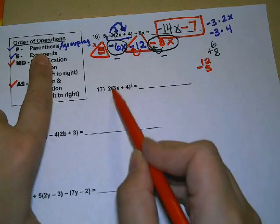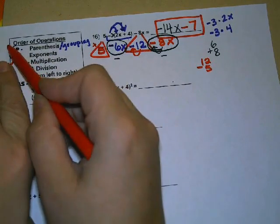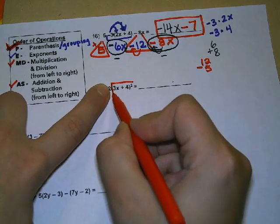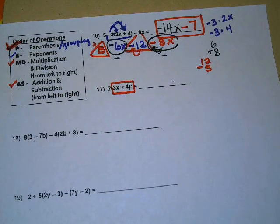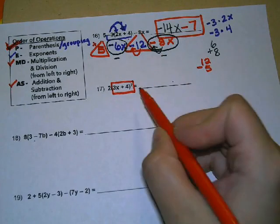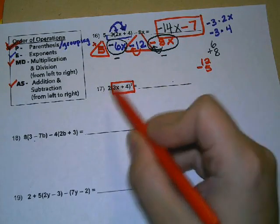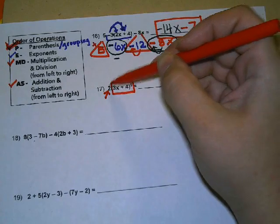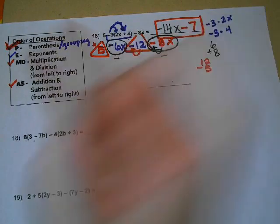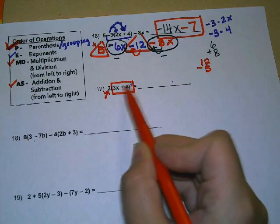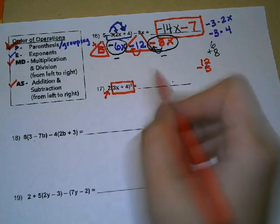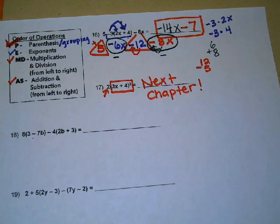The next problem: parentheses first — we can't, because we can't do 3x plus 4. Exponents would go next, and this is something we are actually going to learn in the next chapter of this class. So we're not going to continue with this problem. I wanted to show you that just because this 2 is in front of the parenthesis, it does not mean we can automatically distribute here. In order of operations, exponents come before multiplication — distributing this exponent, which is 3x plus 4 squared, is covered in the next chapter. So we'll go ahead and skip that one.